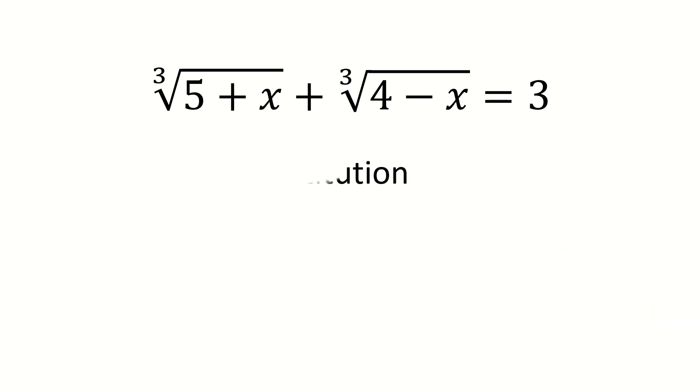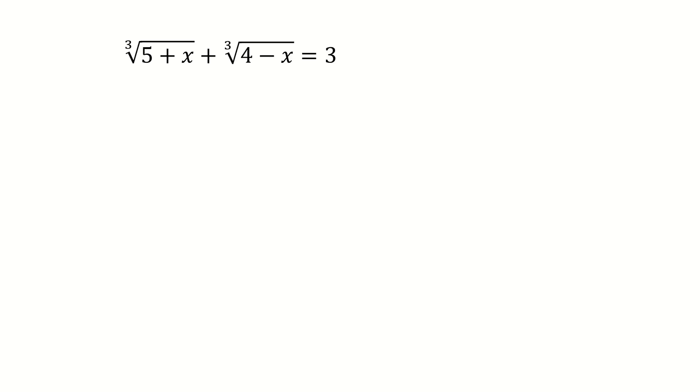The key idea to solve this problem is to use a substitution. We will see how to do that in details. So here, we let a equals to the first term, and b equals to the second term. Immediately, the original equation can be converted to this simple form, a plus b equal to 3. And this is our equation one.